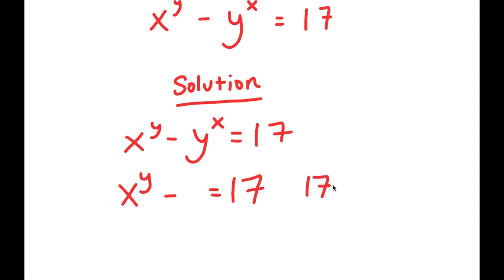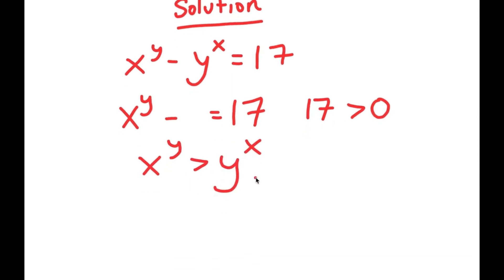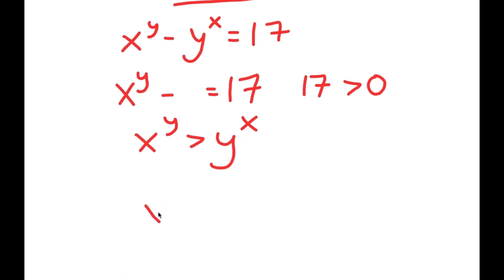And 17 is greater than 0, meaning x to the power of y is greater than y to the power of x. And this also must mean that x is greater than y, and y is greater than 0.